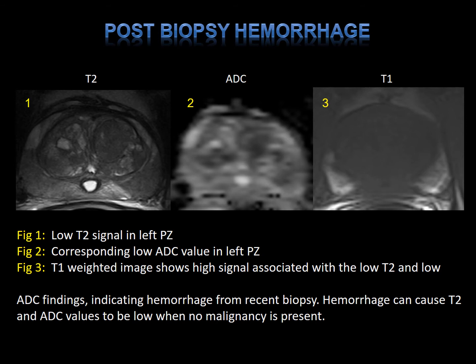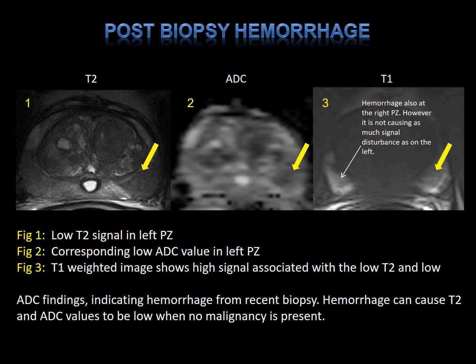Post-biopsy hemorrhage can cause artifacts on prostate imaging. Sometimes the scenario exists when a patient has low-grade, low-volume disease on standard transrectal ultrasound guided biopsy and a prostate MRI is obtained. Notice that in this patient, there's a low signal intensity on the left peripheral zone, consistent with a malignancy. However, when you look at the T1 imaging, there's a degree of hemorrhage present, and it is actually bilateral, but the right-side peripheral zone is not causing as much of a signal disturbance in the other two sequences.